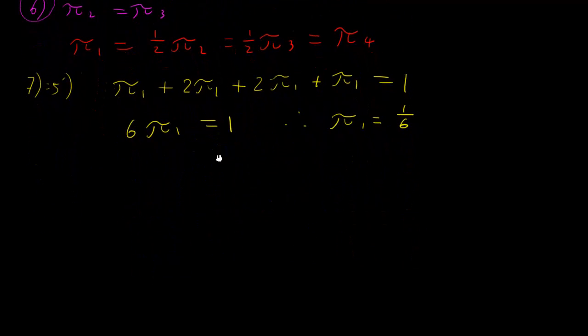Great! Because I now know every number in terms of pi 1, and I know what pi 1 is, our problem just needs to be written out really now. So pi 1 is equal to 1 on 6. Pi 2 is equal to 2 pi 1, so pi 2 is equal to 2 on 6. Pi 3 is the same as pi 2. And pi 4 is equal to the same as pi 1.